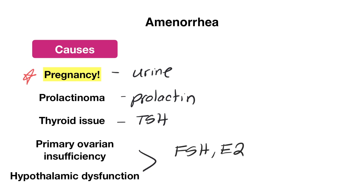We need both hormone levels to differentiate where the issue is. If it's in the ovary itself, you'd have a low estrogen level and a high FSH level. If it's within the hypothalamus, you'd expect a low FSH level as well as a low estrogen level.